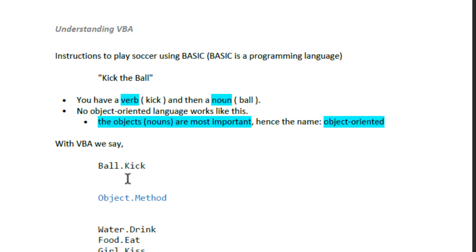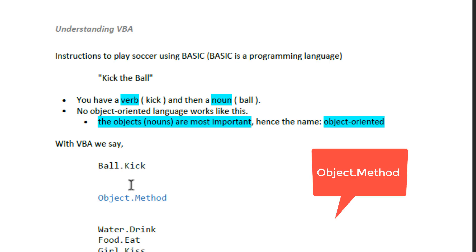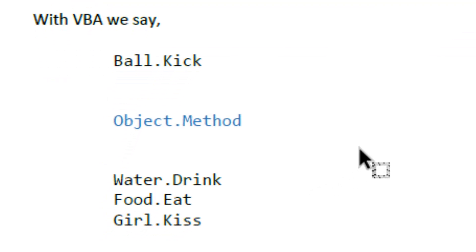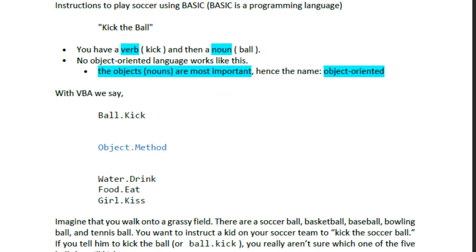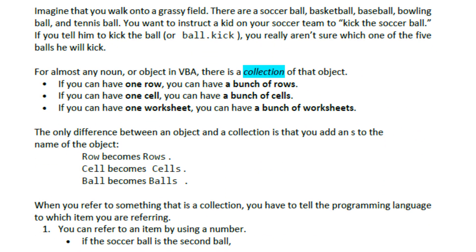Let's talk about VBA: the verb is the method. VBA will use objects and methods. For example, we will call drink.water or food.eat — that means VBA uses object.method syntax. Let's talk about the football path: the game is the ball, so you can do some game.